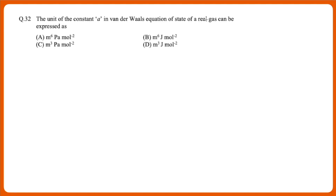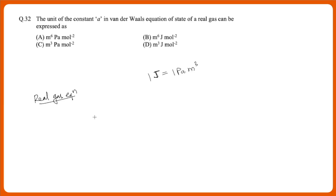The next question asks about the unit of constant 'a' in the van der Waals equation of state for a real gas. The options are: (A) Pa·m⁶/mol², (B) mol⁶·J/mol², (C) m³·Pa/mol², and (D) m³·J/mol². The most important basic thing you should know is how to convert joules into pascal and meter cubed: one joule equals one pascal·meter³. Now look at the real gas equation — specifically the pressure correction term: P + an²/V².